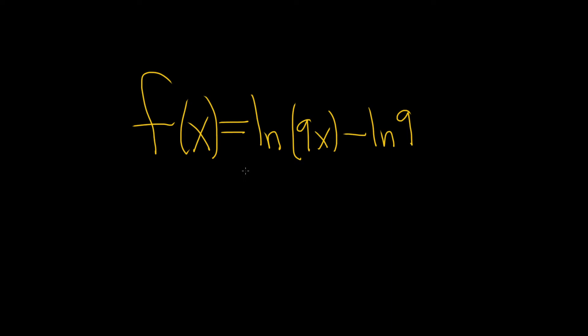In this problem we have a logarithmic function and the question is to simplify it. So the goal is to use some of the properties of logs. In this case we have the natural log of 9 times x. So what we can do here is we can use what's called the product rule.